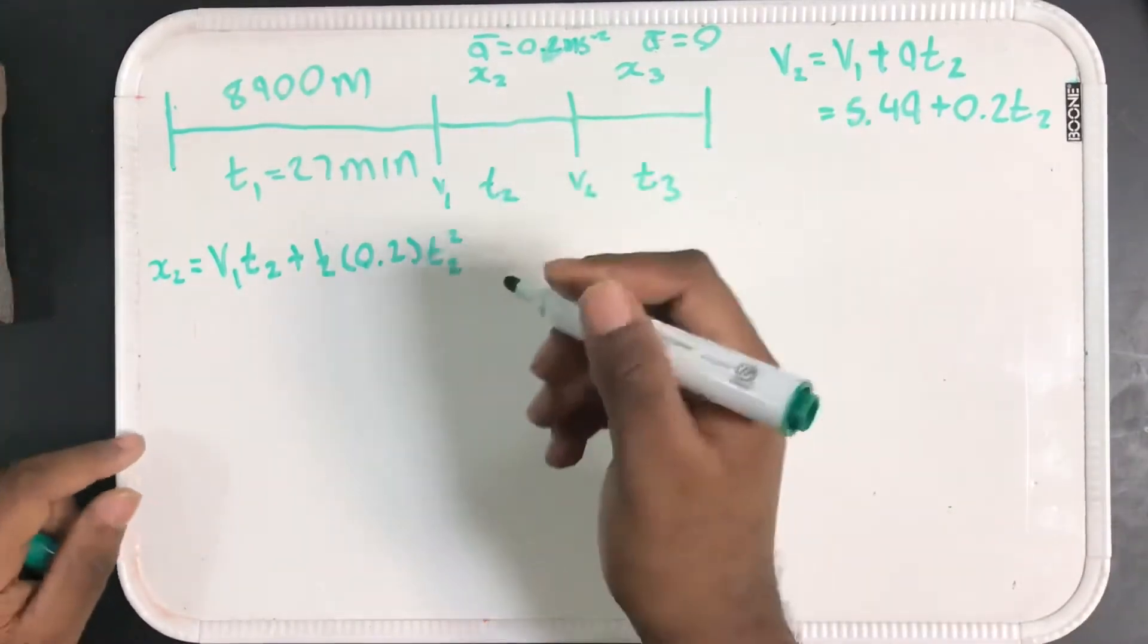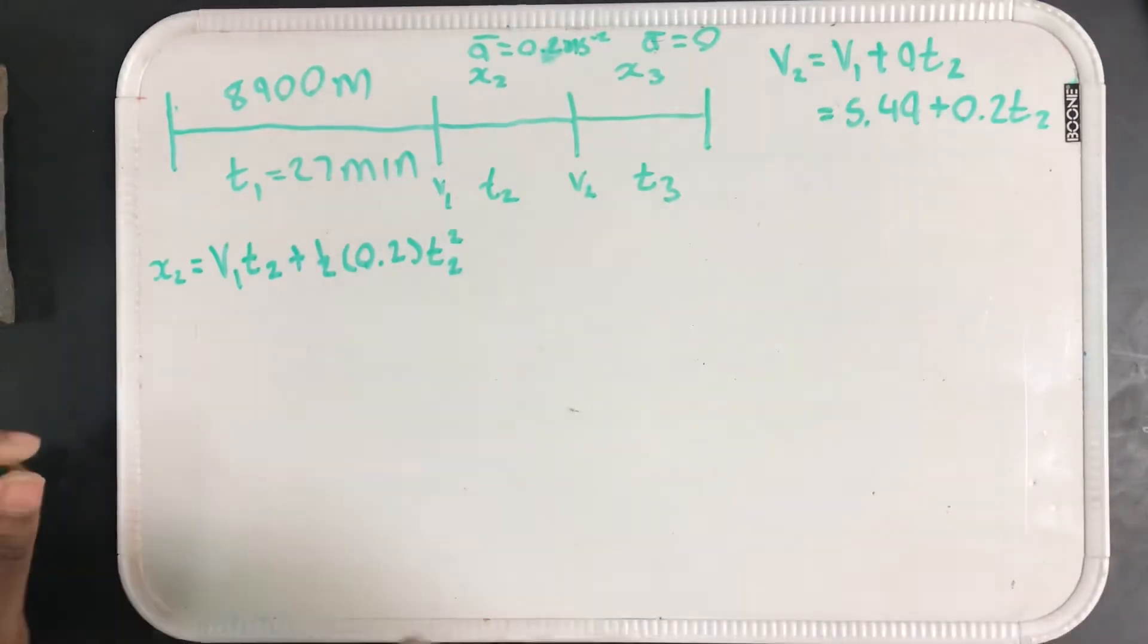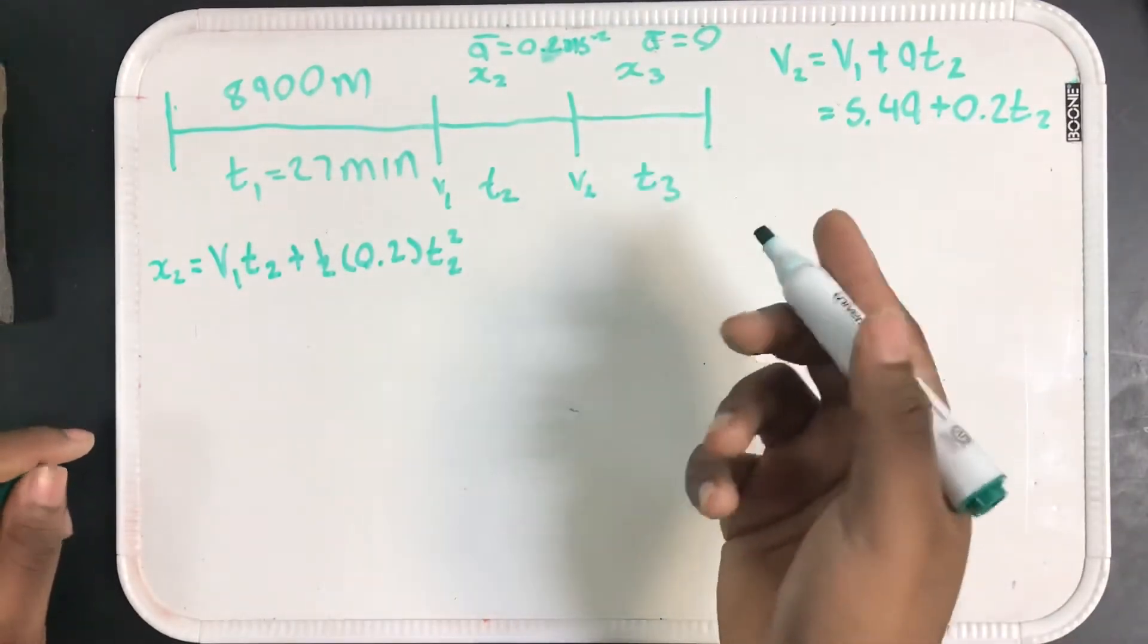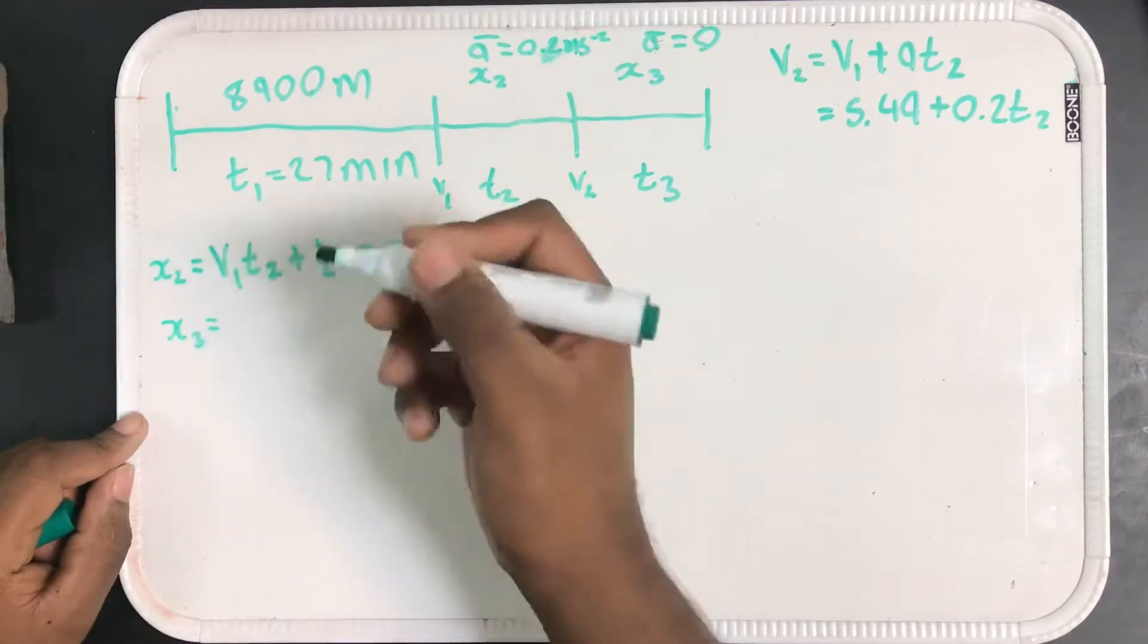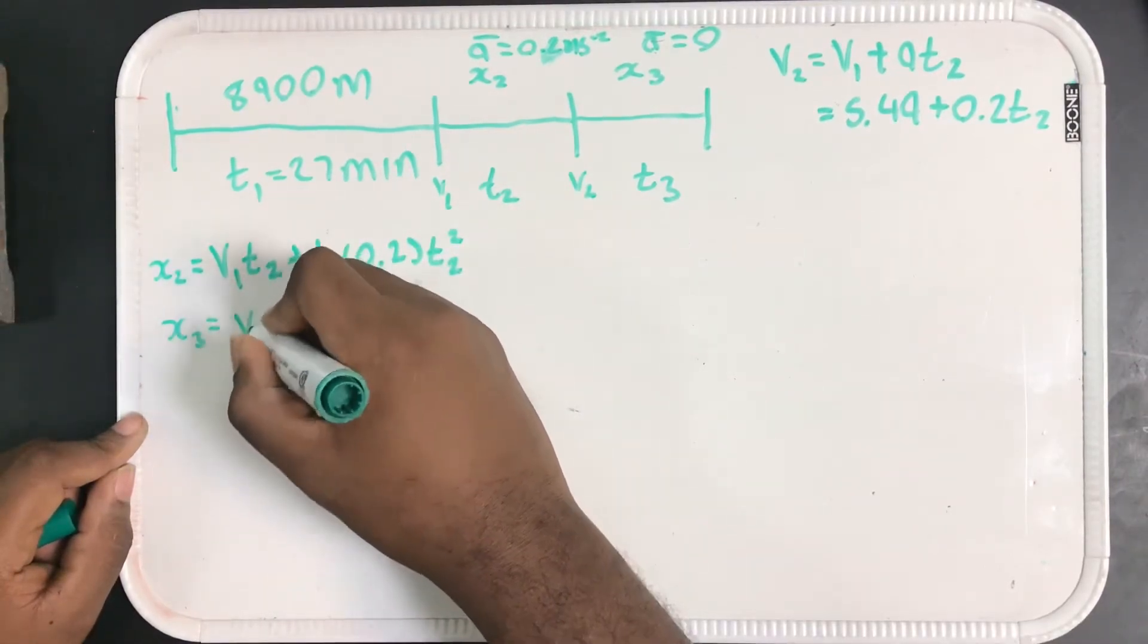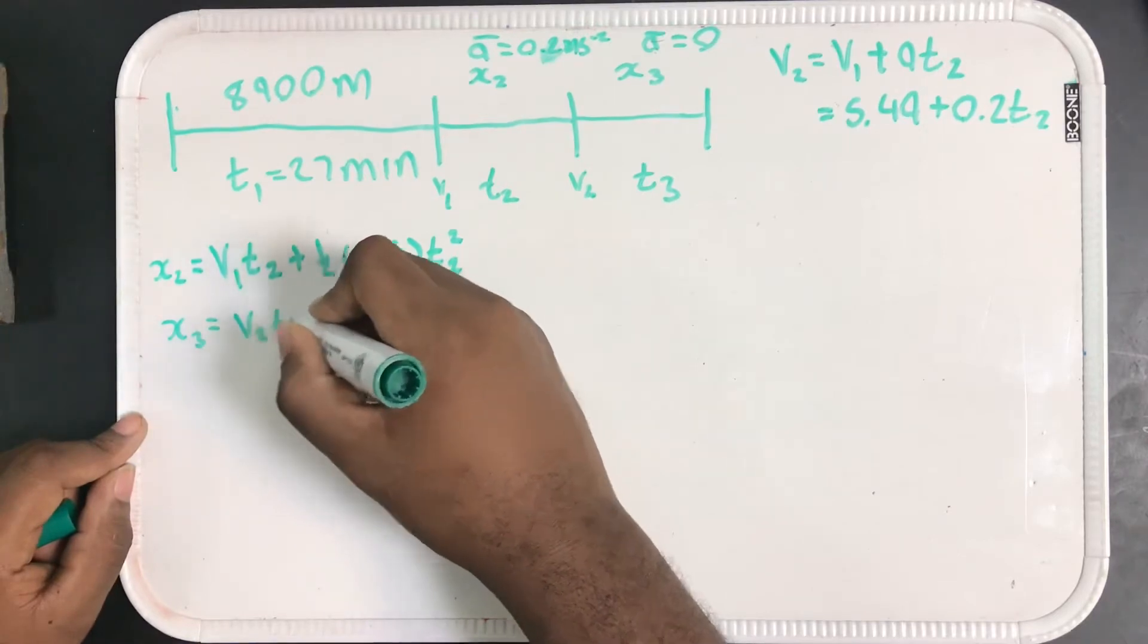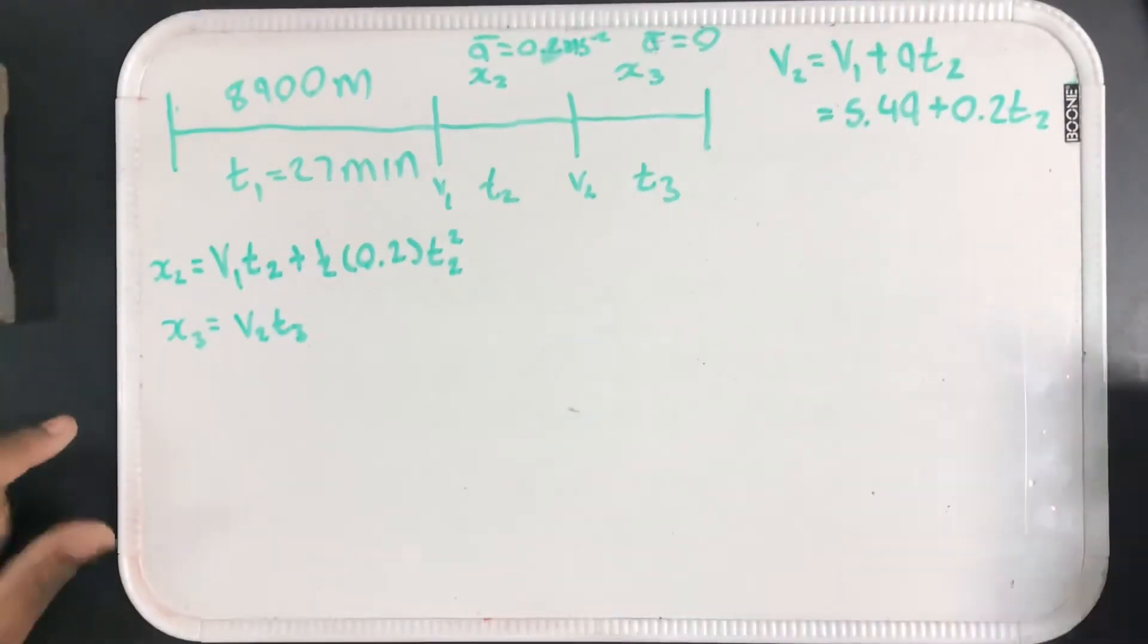If I look at X3, since I know the velocity here is constant, i.e. the acceleration is zero, I know that X3 is just V2 times T3. Now, this still doesn't help me much because I still have a lot of unknowns. However, I know some things.